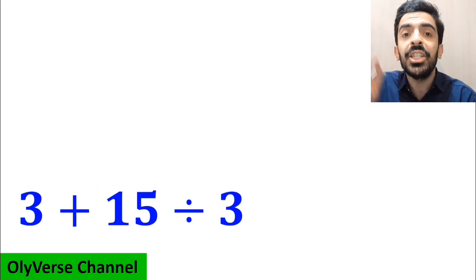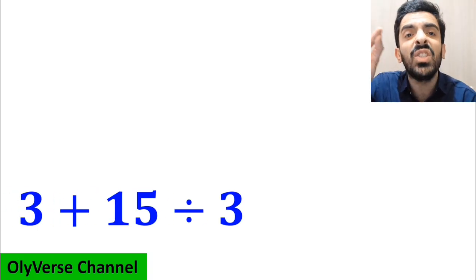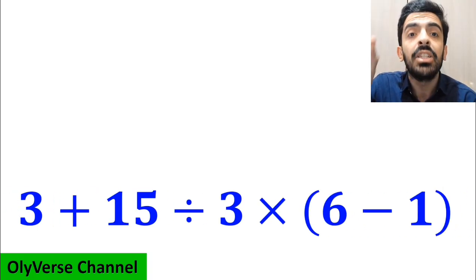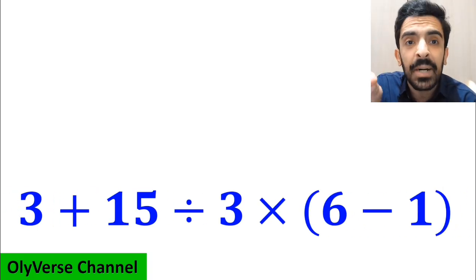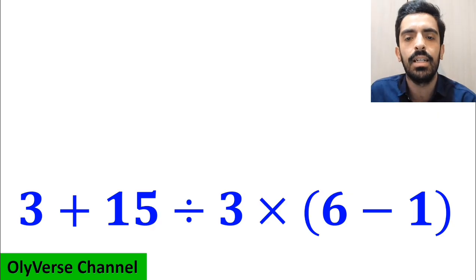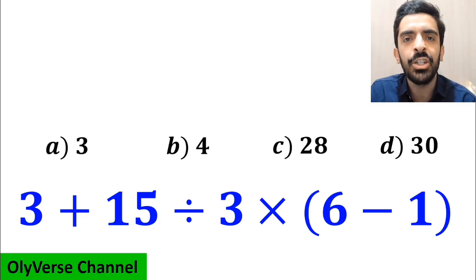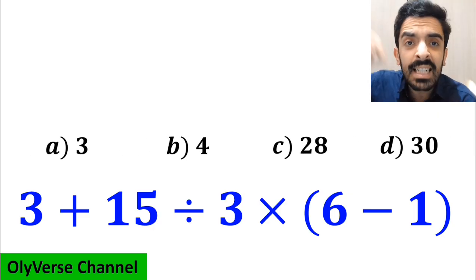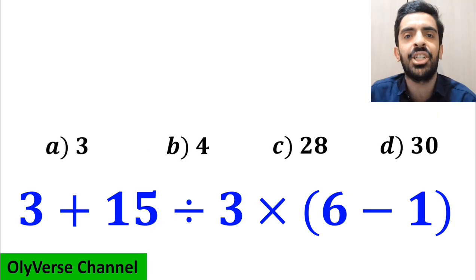What is the value of the expression 3 plus 15 divided by 3 times open parenthesis 6 minus 1 close parenthesis? Which option do you think is the correct answer to this question?